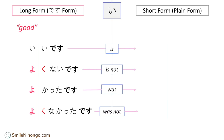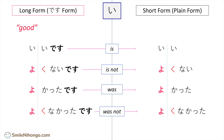But as always, be careful with いい (good). You still just drop です from the long form. So いいです in plain form conjugates like this: いい、よくない、よかった、よくなかった. Now we are done with all the i-adjectives.